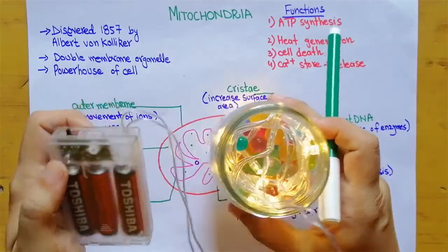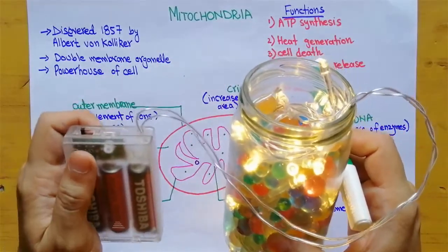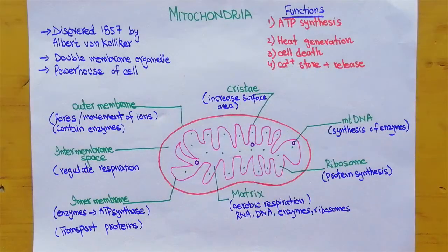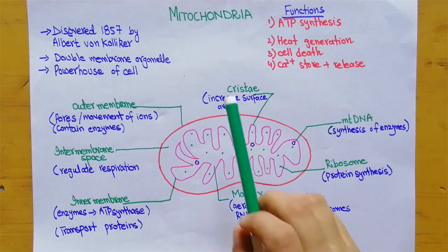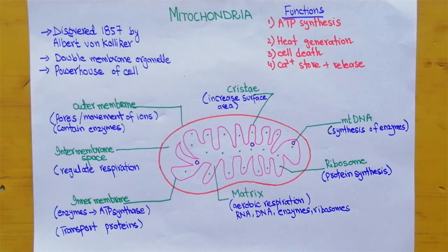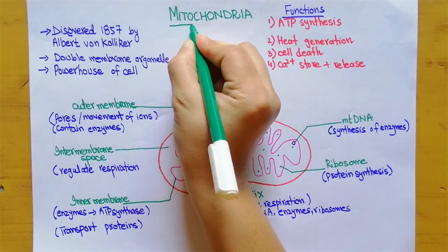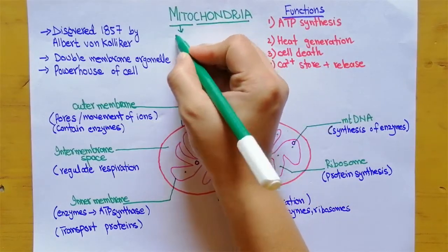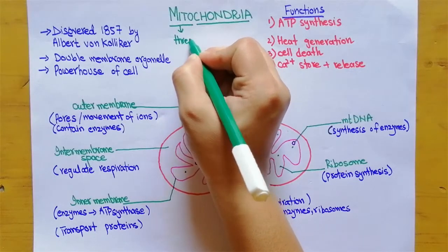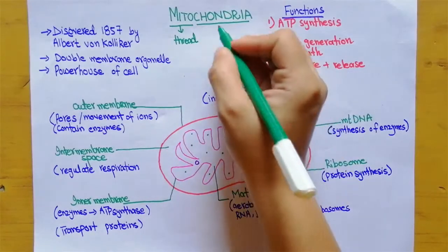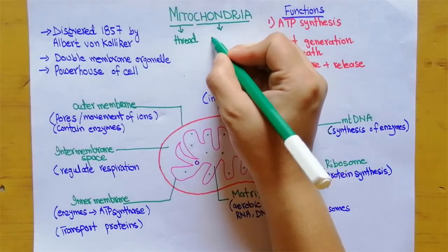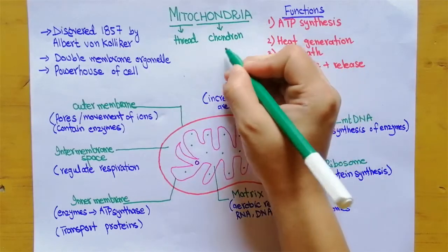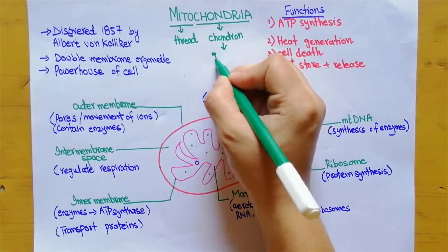Now let's go towards the theory. The word mitochondria is made up of two words: Mito and Chondria. Mito means thread, while Chondria comes from the Greek word Chondrion, which means granules.